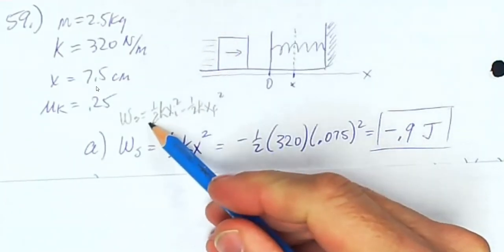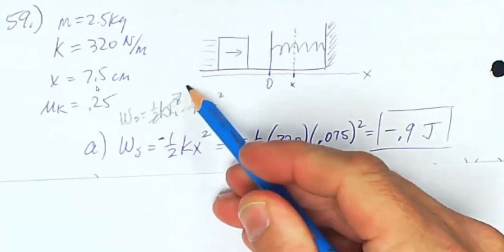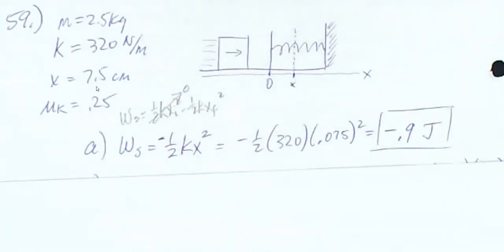Initially, the spring is not compressed. So either way works. Plugging in the numbers that are given, we see that the work done by the spring is negative 0.9 joules.